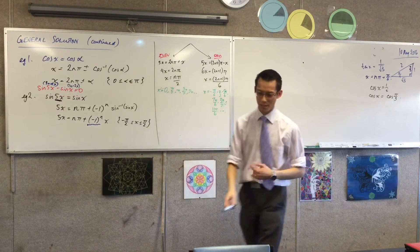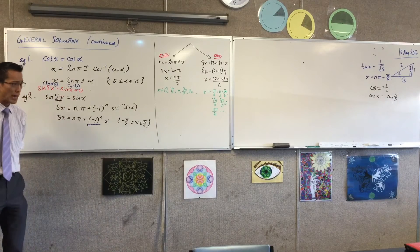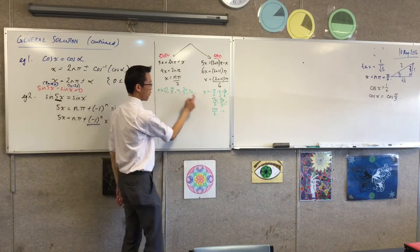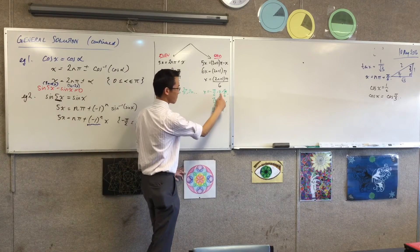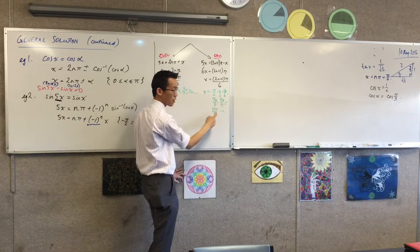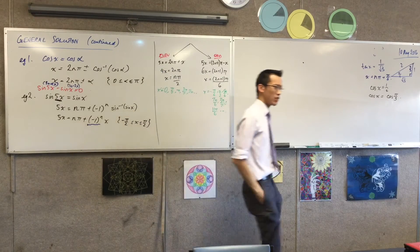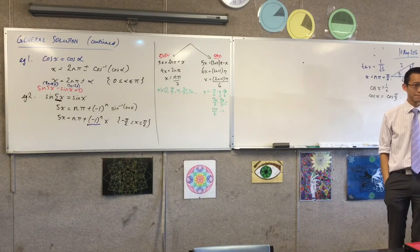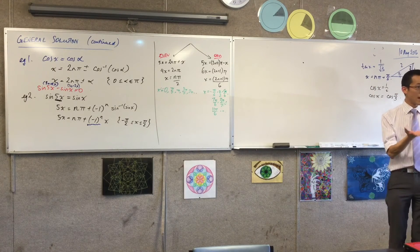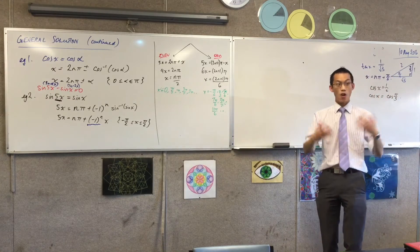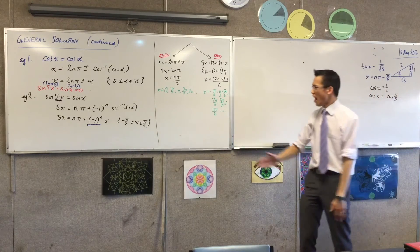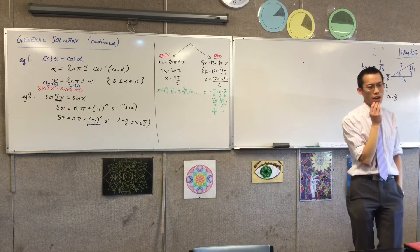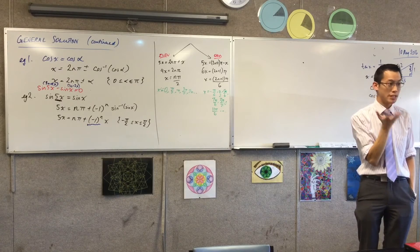Okay, here's the reason why I'm pausing at this spot. How many solutions do you count on the board? 1, 2, 3, 4, 5, 6, 7, 8, 9. That's a heck of a lot of solutions. Why did I stop at 11 pi on 6? It's the last one in the regular domain of 0 to 2 pi. Nine solutions from 0 to 2 pi. Does that mesh with what I was expecting, what I predicted? No.